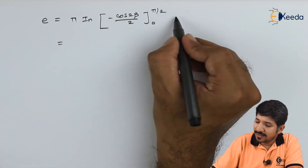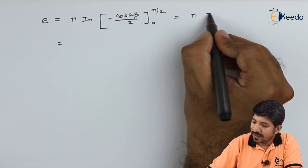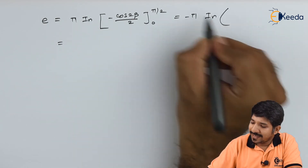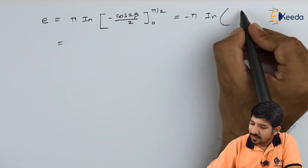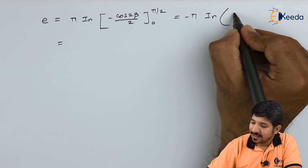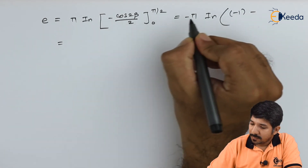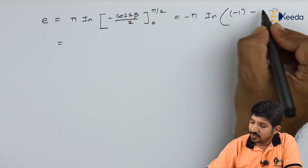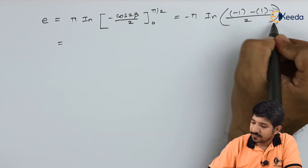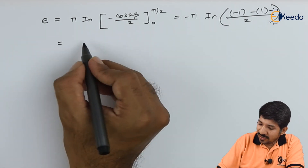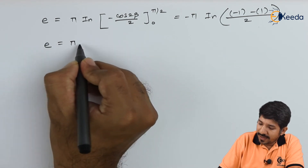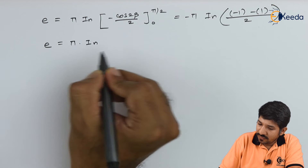Expanding the limits, we get π·IN times minus cos(2·π/2) minus cos(0), all divided by 2. That is, minus cos(π) which is minus 1, minus cos(0) which is 1, divided by 2. At the end of this, we can simply write down that E equals π times IN.